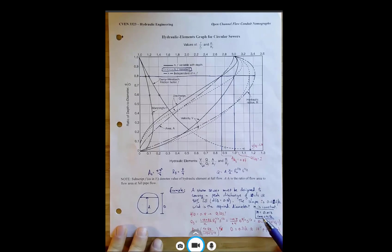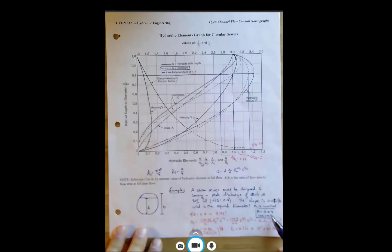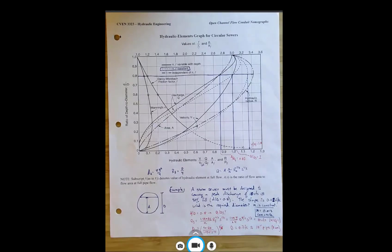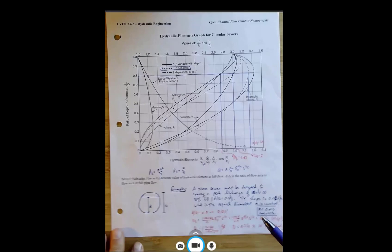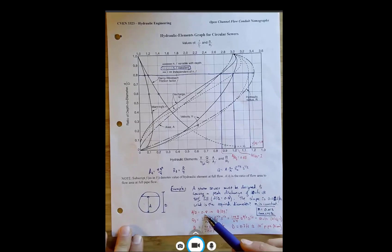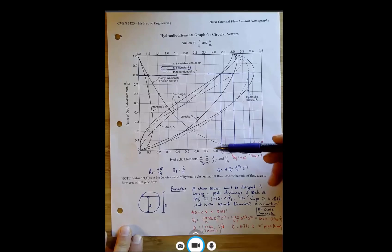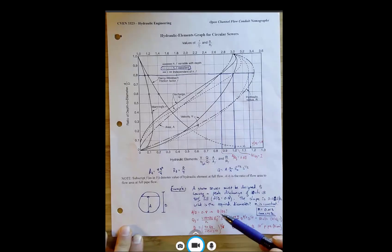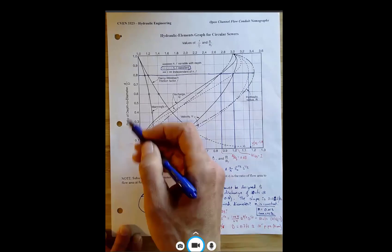Okay. So for concrete, we can go to our table, find n is equal to 0.013. That's kind of a typical value, maybe down to 0.011. So we start with something we know and that's the relative depth is 0.8. So we need to find, because everything's normalized by the full value, we need to find q over qf. So we can go up here to our runoff depth ratio, that's 0.8.